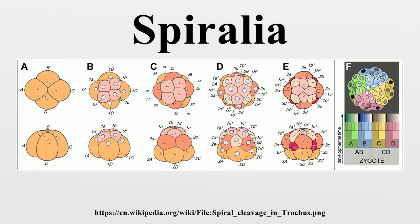More uncontroversially, the term Spiralia is applied to those phyla that exhibit canonical Spiralian cleavage. Spiral cleavage, from which this group draws its name, is a pattern of early development found in most members of the Lophotrochozoa. Members of the mollusks, annelids, platyhelminths and nemertians have all been shown to exhibit spiral cleavage in its classical form. Other Lophotrochozoa phyla are also said to display a derived form of spiral cleavage in at least a portion of their constituent species.